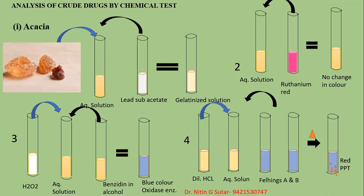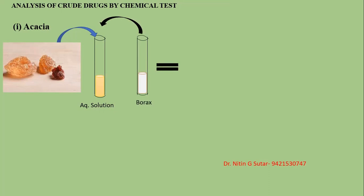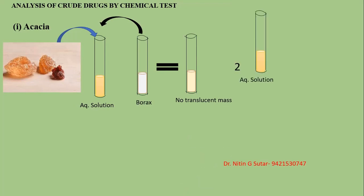These are the four tests for acacia. For the next test, prepare the aqueous solution of acacia and add a small quantity of borax to it. No translucent mass is formed — that indicates acacia is present. In some other drugs a translucent mass is formed, but in the case of acacia with borax, no translucent mass is formed.